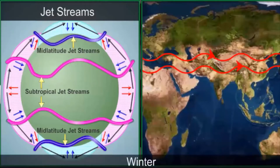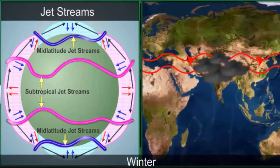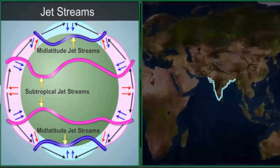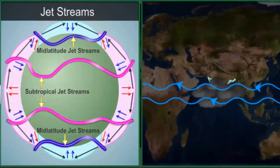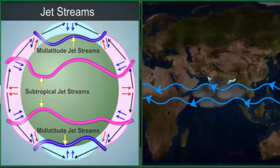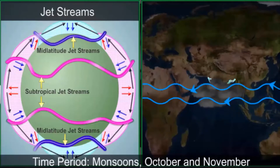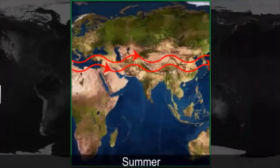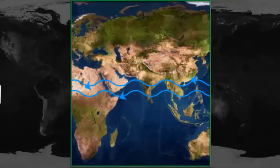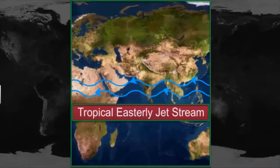In winter, the westerly jet streams bring in the western cyclonic disturbances in the north and northwestern regions of India. The coastal regions of the country are affected by tropical cyclones that are part of the easterly flow. These disturbances occur during the monsoon as well as in October and November. In summer, the subtropical westerly jet streams move north of the Himalayas with the apparent movement of the sun. An easterly jet stream, called the tropical easterly jet stream, blows over peninsular India, approximately over 14 degrees north during the summer months.